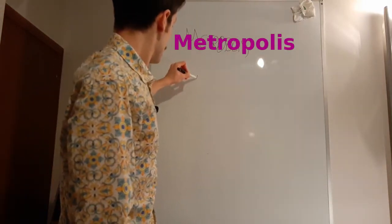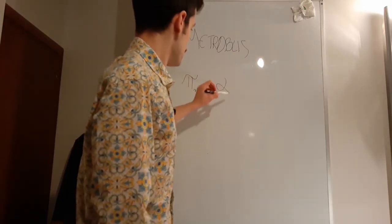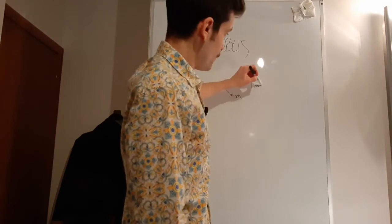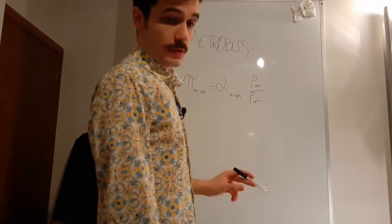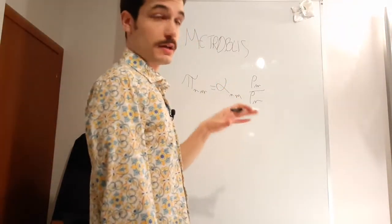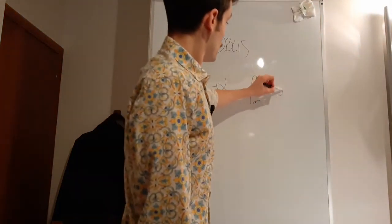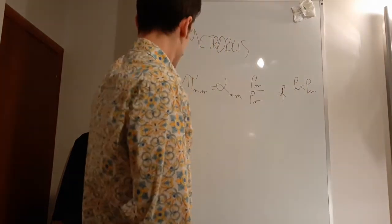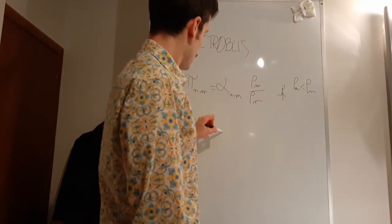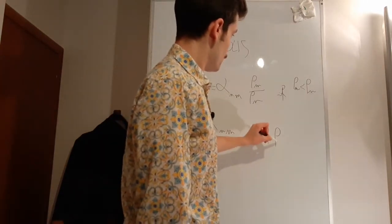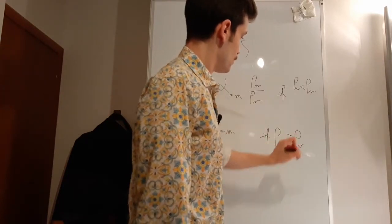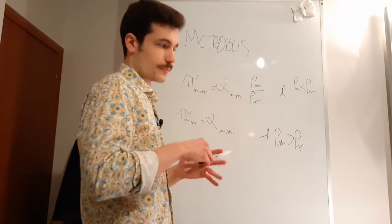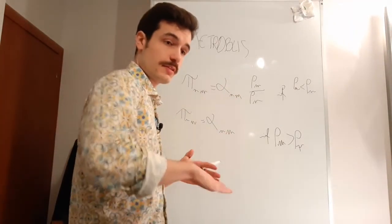In Metropolis, pi_{nm} is equal, again, to alpha_{nm} times rho of the arrival state divided by the probability of the starting state — so rho_m over rho_n — if rho_m is smaller than rho_n. And pi_{nm} equals only alpha_{nm} if rho of the arrival state is bigger than rho of the starting state. It's like when I discussed importance sampling — if we go to a deeper place, we always accept it.